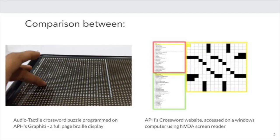This paper discusses a study comparing the experiences of visually impaired users solving a crossword puzzle on two systems. The first system in the image to the left is the tactile crossword represented on a full-page refreshable braille display with audio announcements. The second system in the image to the right is a crossword puzzle website designed by APH accessed on a Windows computer with an NVDA screen reader. Our paper goes on to describe our observations and findings from this study and design recommendations for integrating a full-page refreshable braille display with other spatial applications similar to crossword puzzle.